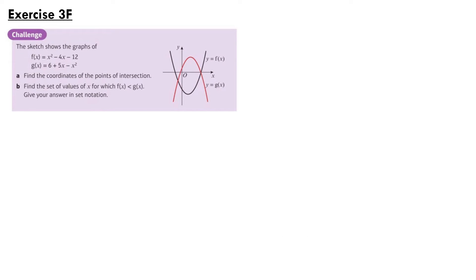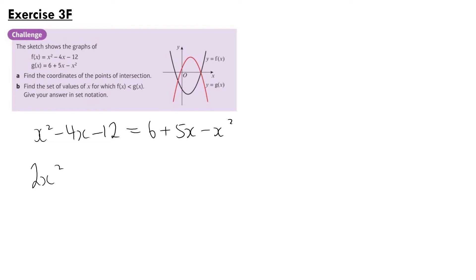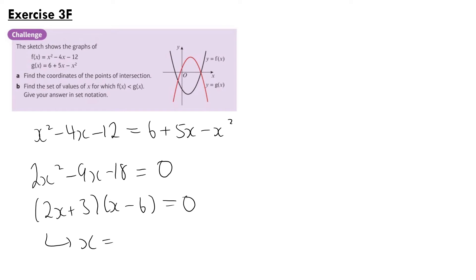This question from Exercise 3f has a sketch of two graphs: f(x) equals x squared minus 4x minus 12, and g(x) equals 6 plus 5x minus x squared. Part a asks us to find the coordinates of the points of intersection. Setting the two curves equal: x squared minus 4x minus 12 equals 6 plus 5x minus x squared, giving 2x squared minus 9x minus 18 equals 0. Factorising: (2x plus 3)(x minus 6) equals 0, so x equals minus 3/2 or x equals 6.